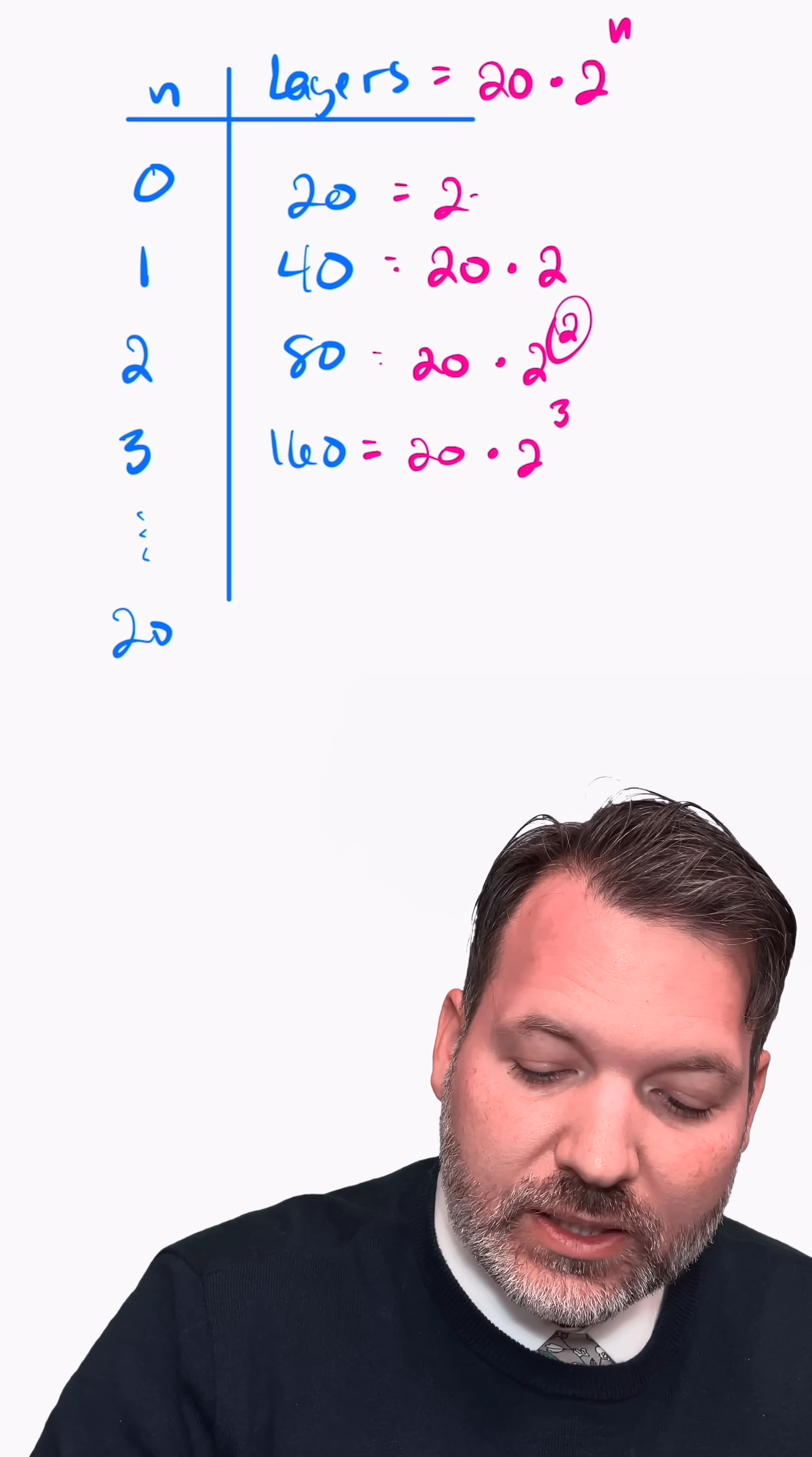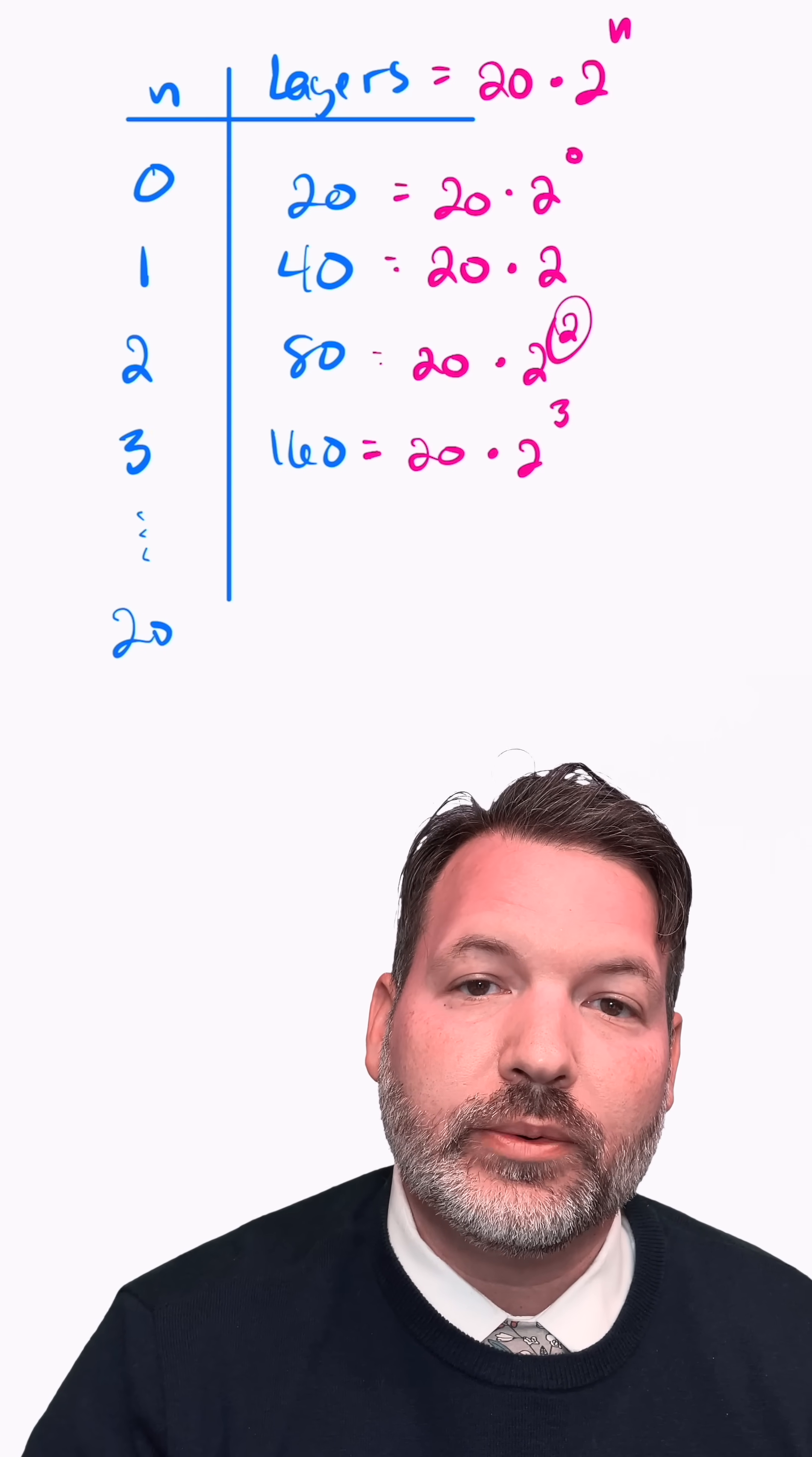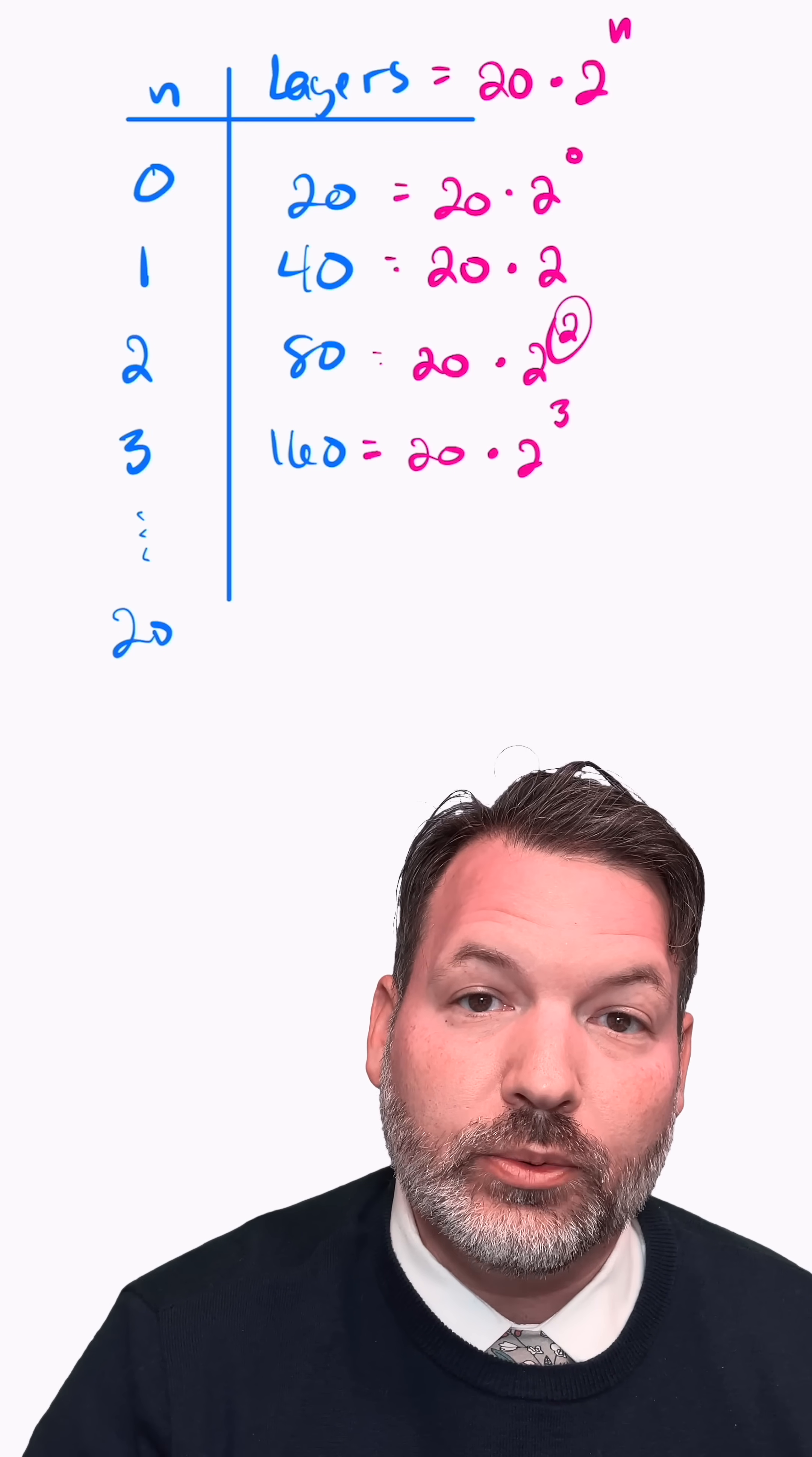As an aside, this is one of the reasons why we want to let things raised to the zero power be one and not zero. So that in that initial count, we are getting correctly 20 layers, not zero layers.